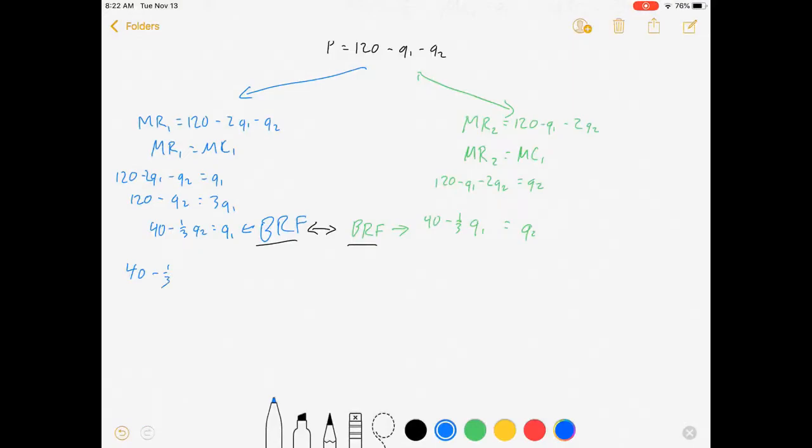This is where our math gets a little messier. For firm one, 40 minus one-third q2, well let's substitute q2 in: 40 minus one-third q1 equals q1. For firm two, 40 minus one-third times (40 minus one-third q2) equals q2. What I've done here is I have substituted each firm's best response function into the other's, and by doing that I will be able to solve for the equilibrium in which both firms are maximizing profits given the other one's behavior.